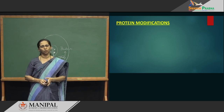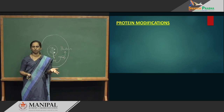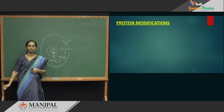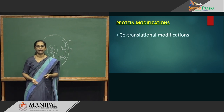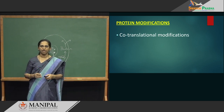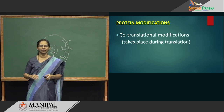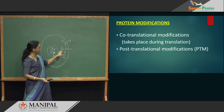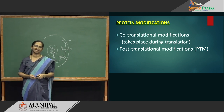Once a protein is made, it is not directly used — maybe a few will be directly used, but some of them have to be modified. Protein modifications are of two types. First one is co-translational — that means as you are synthesizing, you are modifying it; it takes place during synthesis itself. But there is one more we have to study today, and that is post-translational — you make the protein and then try to modify it, and that becomes post-translational modification. It takes place after the translation.